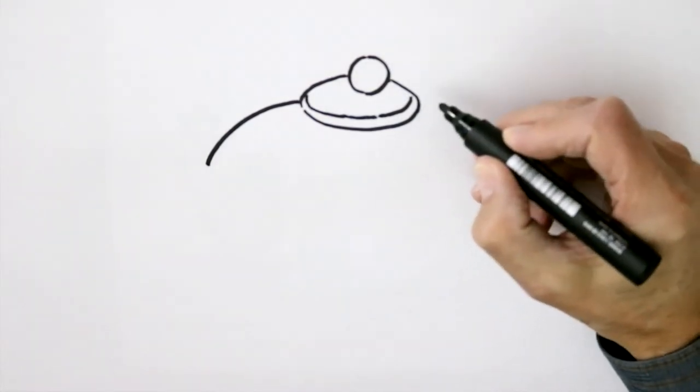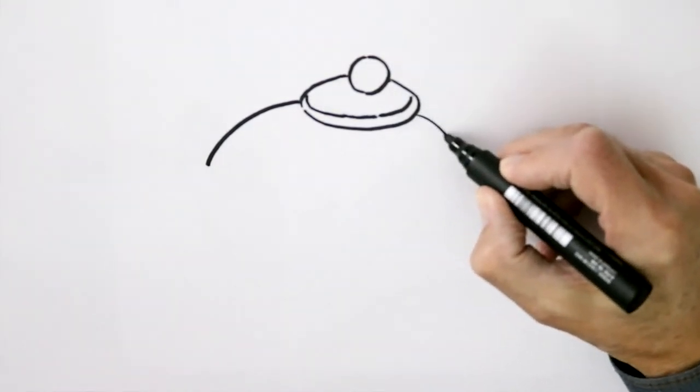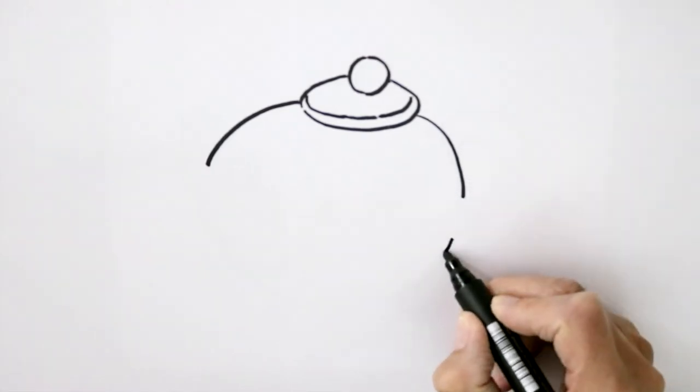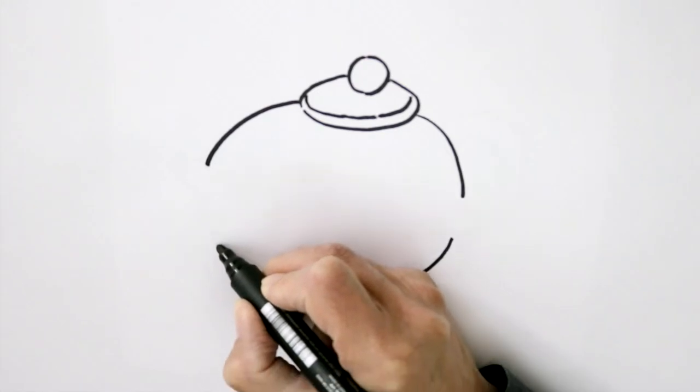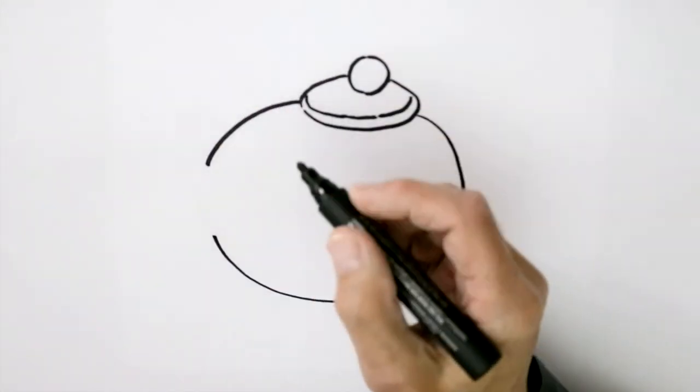I'm going to put the spout in there and we'll come around this side, nice fat shape, bring it right around like that, all the way up to there, stop there, because this is where the spout comes in.